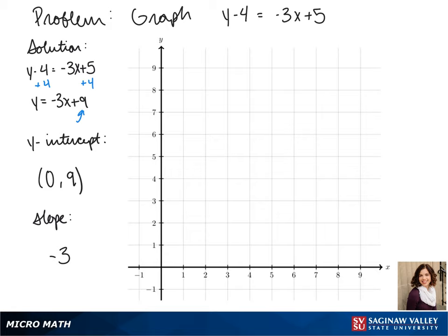So we graph our y-intercept and remember that it's technically negative 3 over 1, so we go down 3 and over 1, down 3 and over 1, and down 3 over 1.